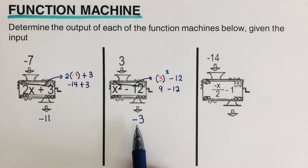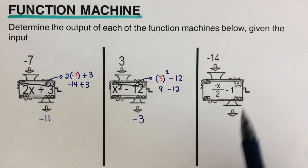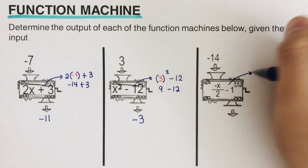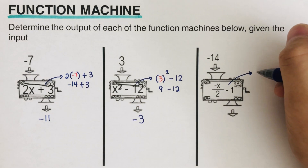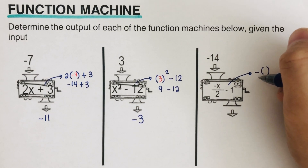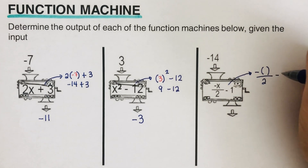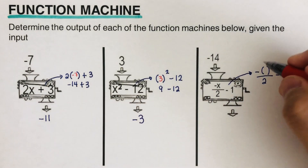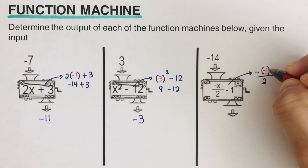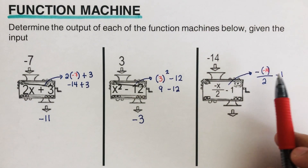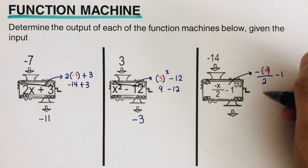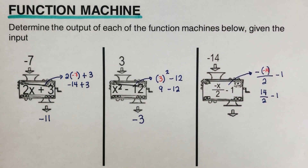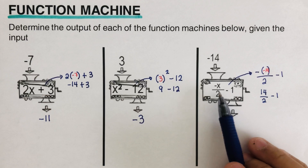For the next problem, we again change the variable into a parenthesis first — so that gives us negative of parenthesis, divided by 2, minus 1. Now you can see the importance of writing in parenthesis first: once we put in negative 14, we have negative of negative 14, which turns into a positive — so we get positive 14 divided by 2, minus 1.